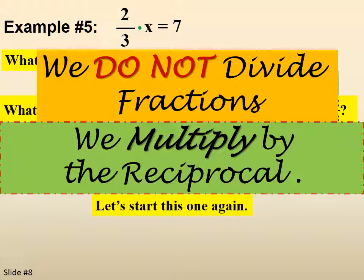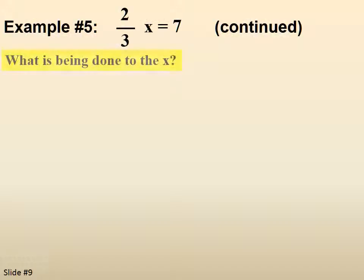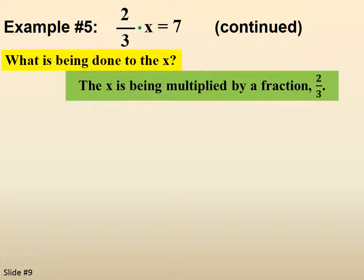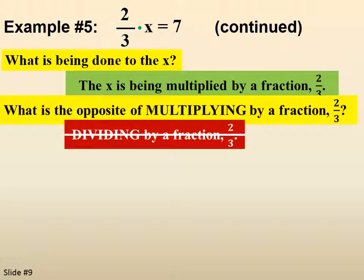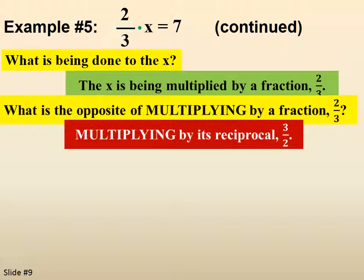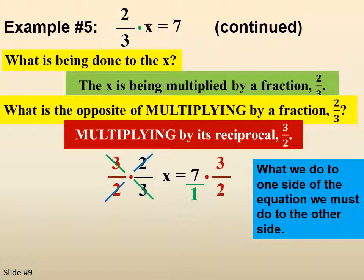2 thirds x equals 7. What's being done to the x? It's being multiplied by a fraction 2 thirds. What's the opposite of multiplying by a fraction 2 thirds? Not dividing by a fraction 2 thirds. But multiplying by its reciprocal 3 halves. So we multiply 3 halves again on both sides. On the left hand side you can see that the 3s cancel and the 2s cancel. Then we make the 7 look like a fraction and we can clearly see now that x is 21 over 2.